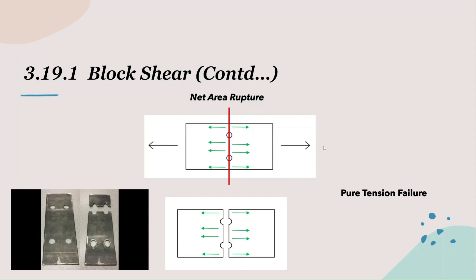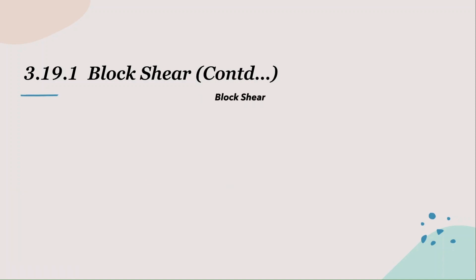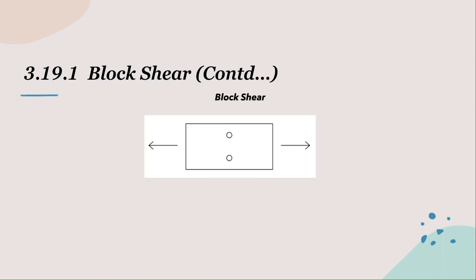We concluded that net area rupture is a pure tension failure. In both cases, the fracture planes were perpendicular to the line of force and the mode of failure was pure tension. Now comes the interesting part — let's visualize block shear failure. Imagine the same plate in tension. The net section or failure plane was always perpendicular to the line of force, but that is not the case every time. Look at the potential fracture plane: there is a vertical plane and a horizontal plane. Planes perpendicular to the line of force are under pure tension, shown by green arrows.